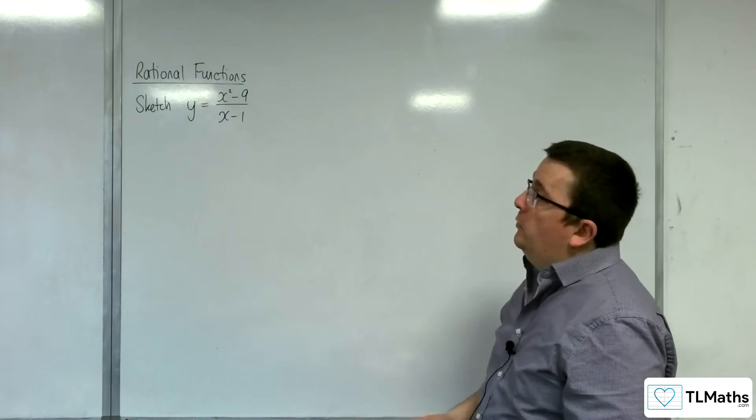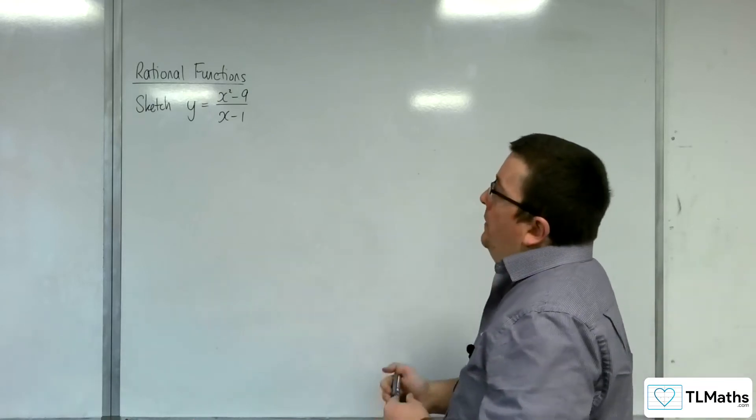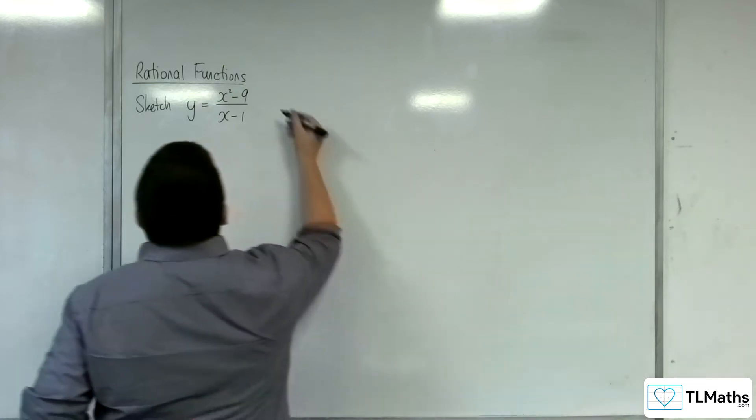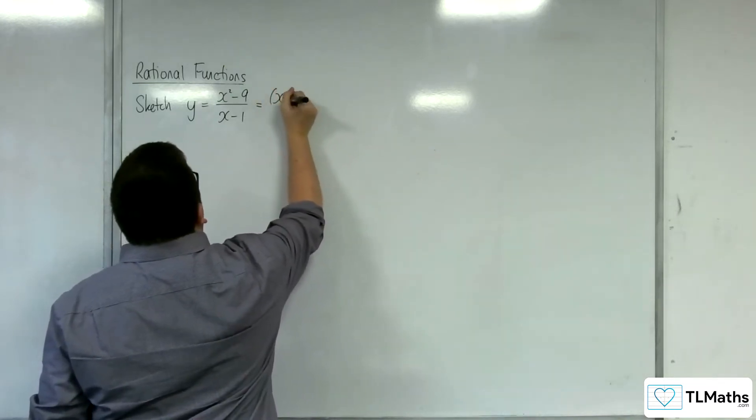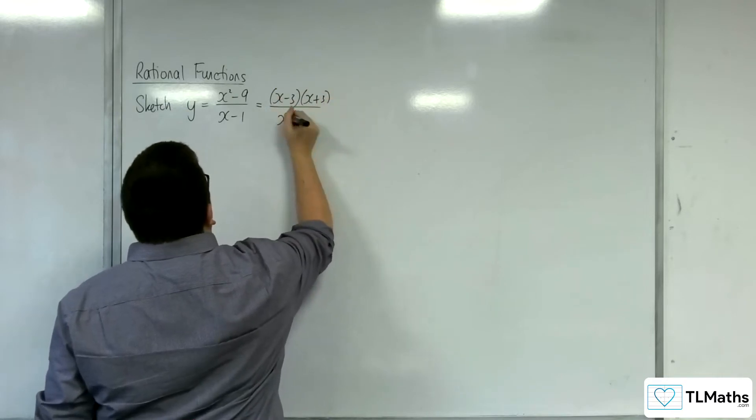In this video I'm going to be sketching y equals x squared take away 9 over x take away 1. Now that numerator can factorize the difference of two squares to x take away 3, x plus 3, that's over x take away 1.